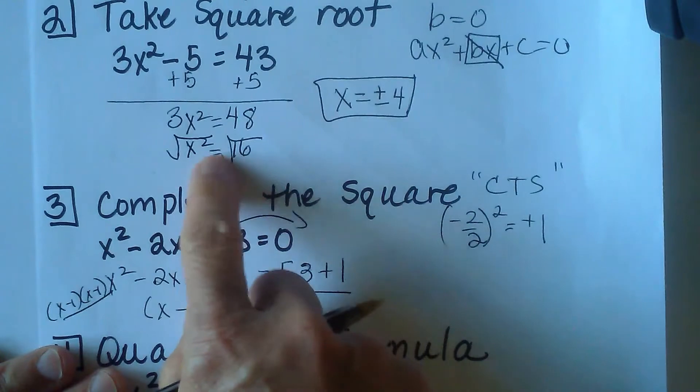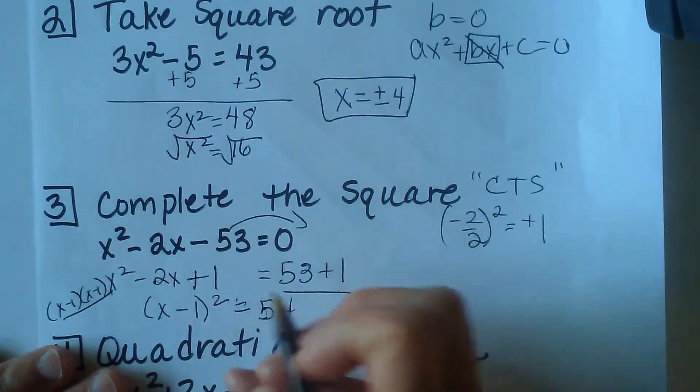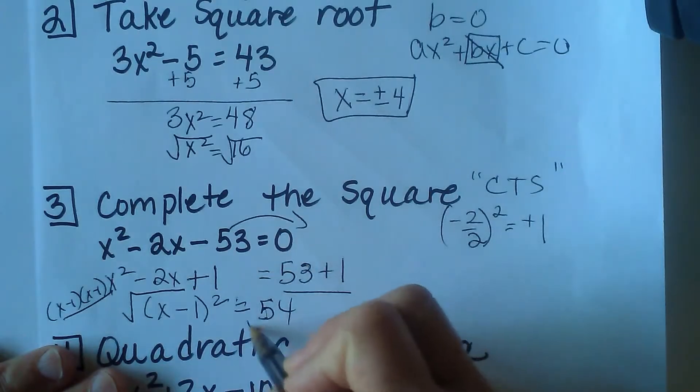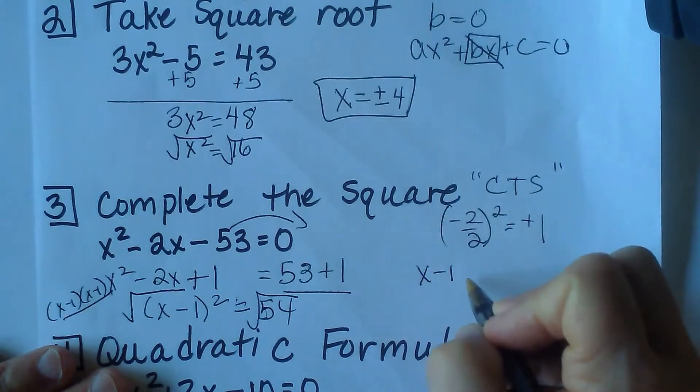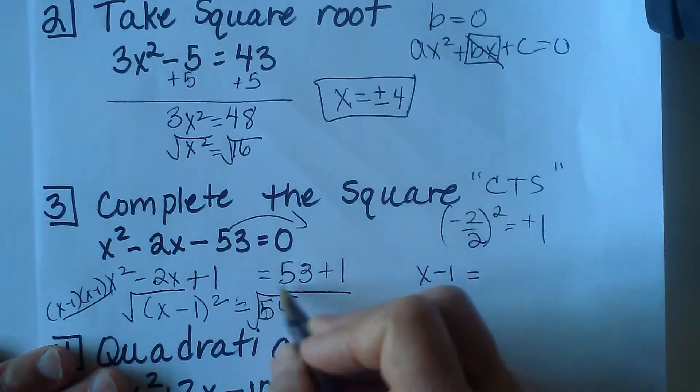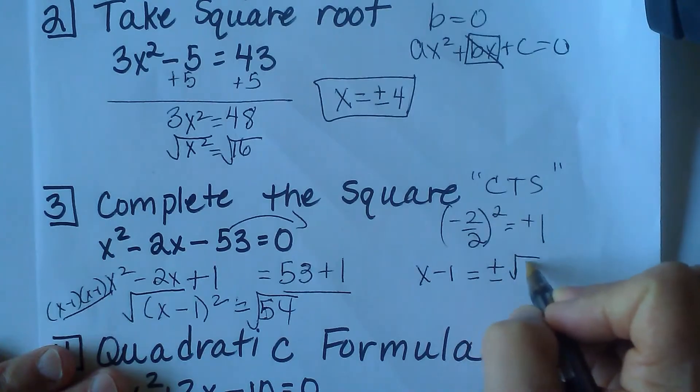Now again, it's kind of like the square root method. We have a perfect square. That perfect square just happens to be a binomial. But you use the same method. You're going to square root both sides. So you get x minus 1 is equal to, and again we have two solutions, both a positive and a negative root 54.